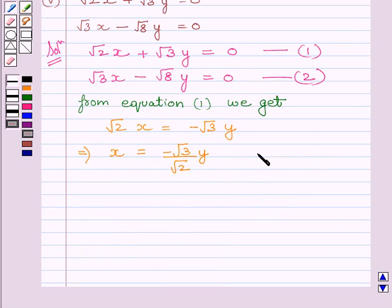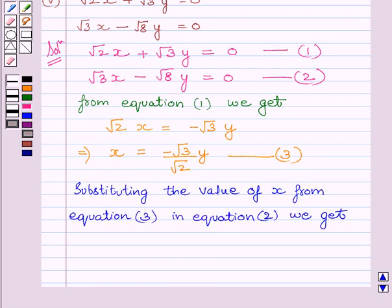We name this equation as 3 and substitute the value of x from 3 in equation 2. So root 3 multiplied by minus root 3 upon root 2y minus root 8y is equal to 0.